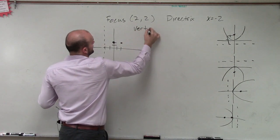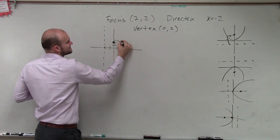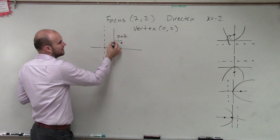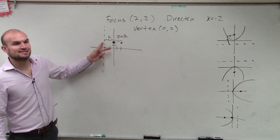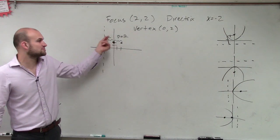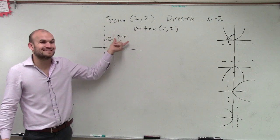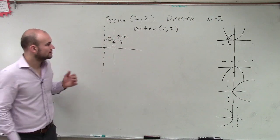And why do I know that again? Because I know that this distance, which is P, is equal to two. And even though I'm going in the negative direction, we know that that distance is two as well, right? Because the distance between your directrix and your vertex and your vertex and your focus is exactly the same. But since I'm going to the right, my P value equals two.